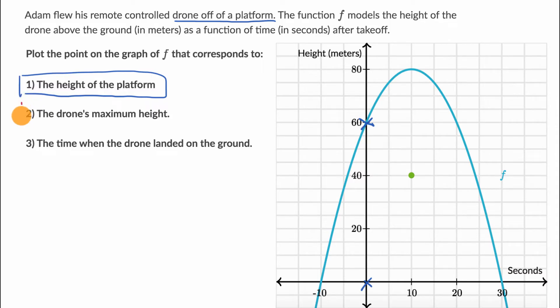The next one is the drone's maximum height. As time goes on, we can see the drone starts going to a higher and higher height, gets as high as 80 meters, and then it starts going down. So it looks like at time 10 seconds, the drone hits a maximum height of 80 meters.